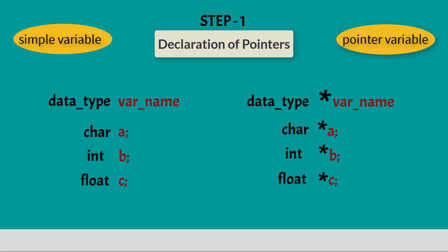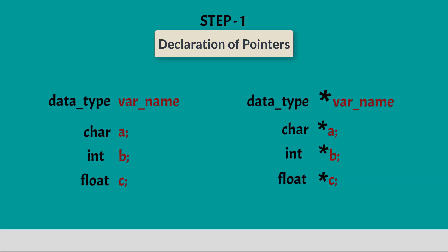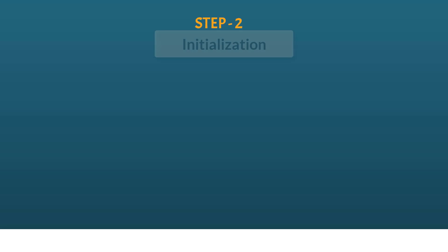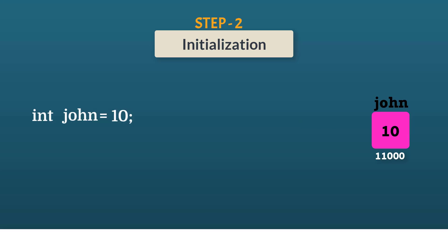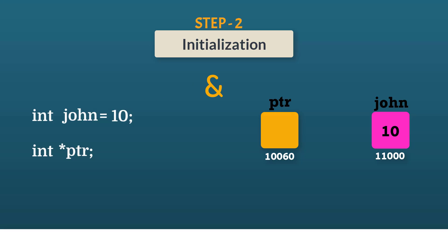In the first step we have seen how to declare a pointer variable. Now in the second step, after declaring a pointer variable, we have to see how we can store an address into a pointer variable. Let's take an int type variable, name it John, and assign it some value. Also declare an int type pointer variable. To store the address of John into the pointer, we have to use the & operator. Whenever the & symbol is used before a variable name, we can get the address of that variable. Now we can store this address into the pointer. By doing so, our pointer variable is now pointing to John because it has John's address.